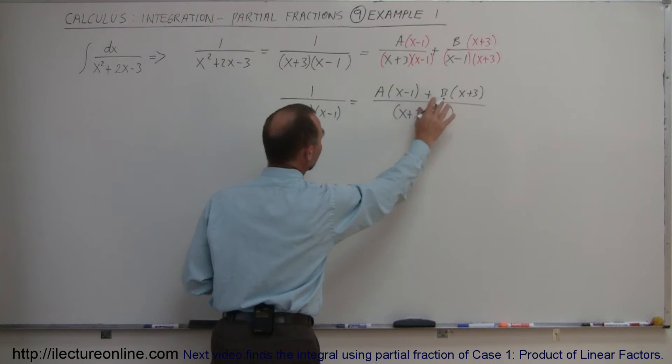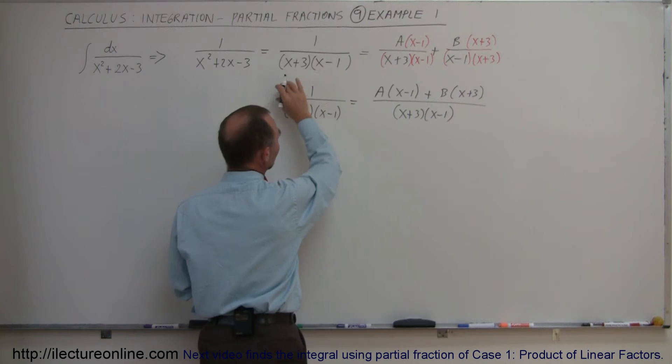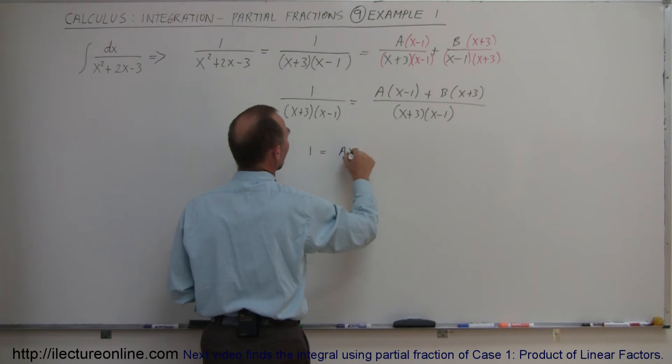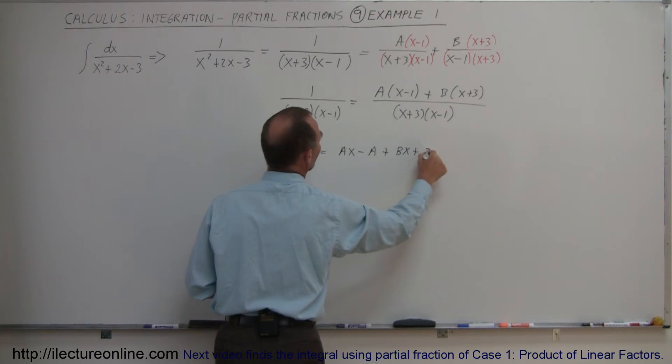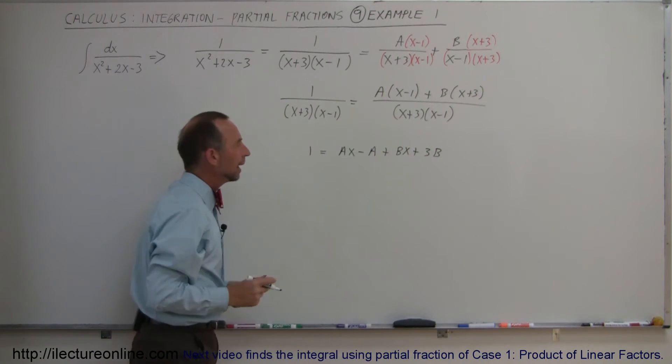So again, multiplying this out, I can say therefore, if I just take the numerators now, I can say that 1 is equal to Ax minus A plus Bx plus 3B.